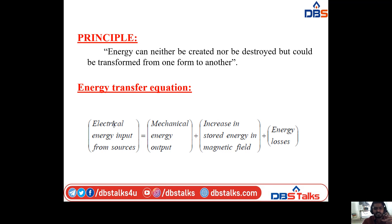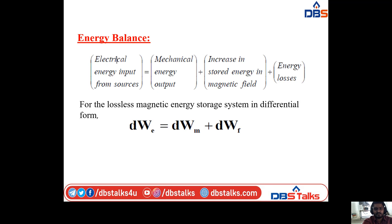The electrical energy input from sources, that is the input power, is equal to mechanical energy output — the energy output or power output — plus increase in stored energy in the magnetic field, plus energy losses. For the lossless mechanical energy stored system in differential form: dWe = dWm + dWf.